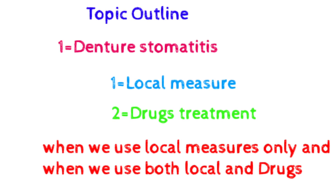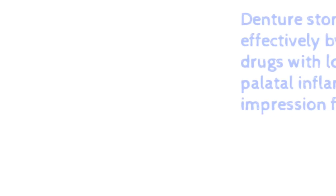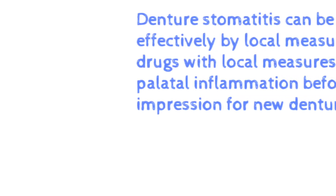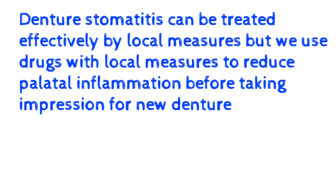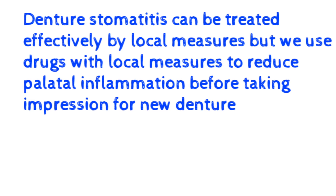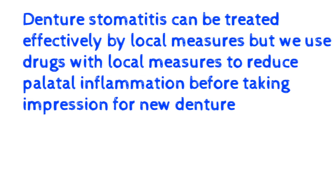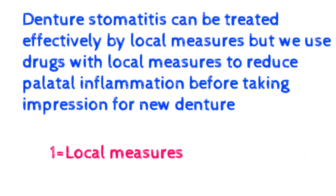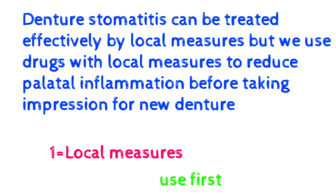The answer is that denture stomatitis can be treated effectively by local measures alone. However, we use drugs together with local measures to reduce palliative inflammation before taking an impression for a new denture. If we are taking an impression for a new denture, then we use local measures plus drugs. As studied in the antibiotic series and Part 1, in every disease we first go for local measures, then if not treated, we go for drugs.